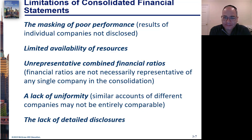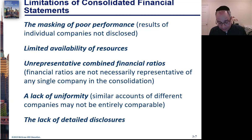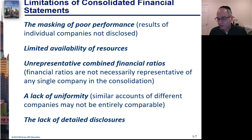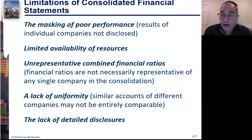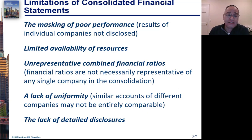It's kind of the same thing here. You may have a limitation of resources — some entities may be more liquid or solvent than others, and because they're separate corporations, you can't necessarily take money from one and put it into the other. And because you're combining companies in different industries, you can't look at ratios for individual industries. For example, you may have a company with a manufacturing arm and a bank. You'd want to compare each to its peers, but because it's all consolidated, you can't compare them to either. They're not comparable to other companies in any industry, and there's a lack of uniformity and detail needed for substantial analysis.